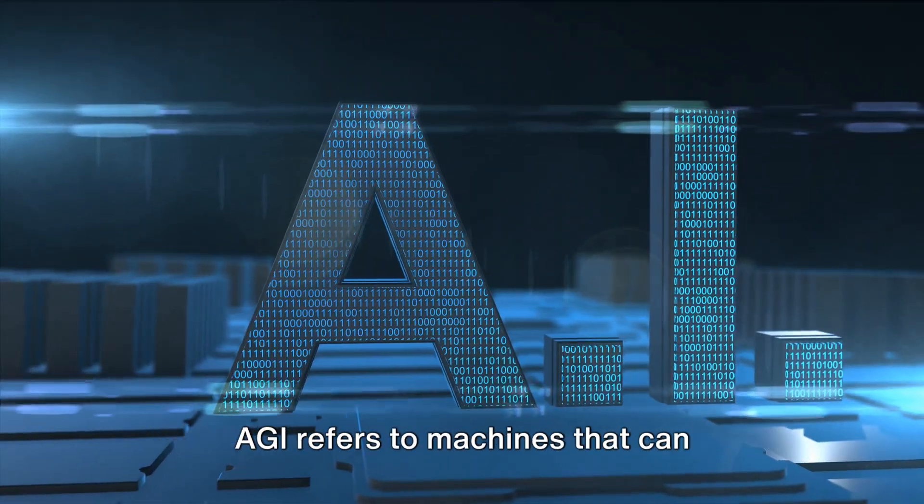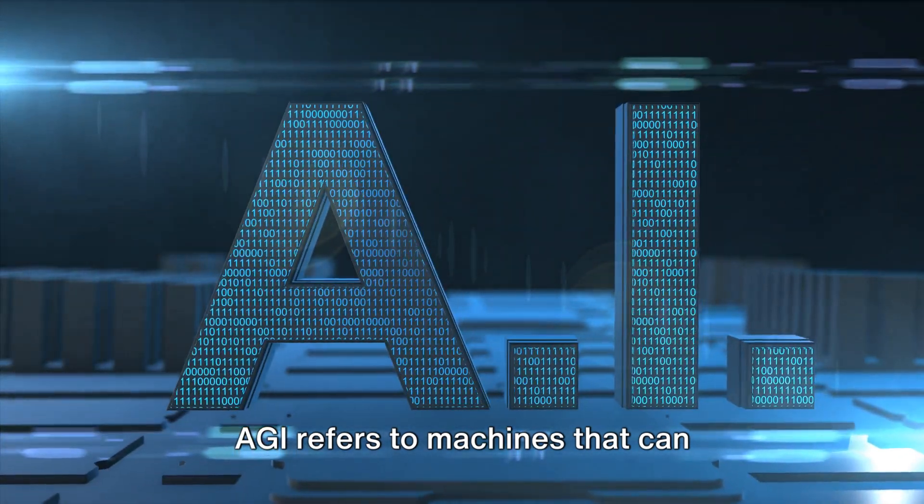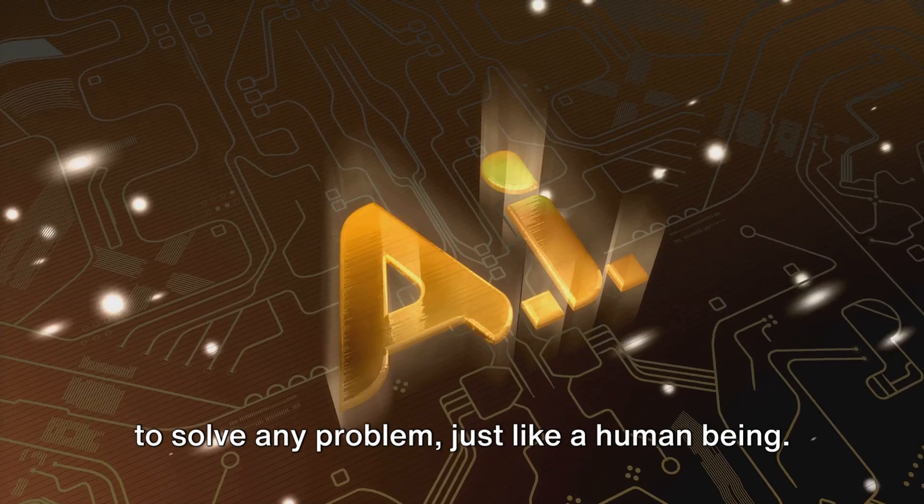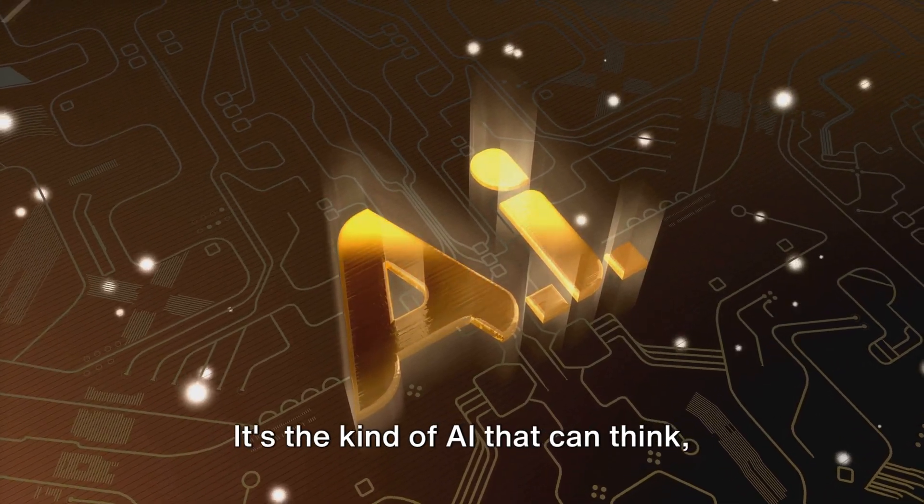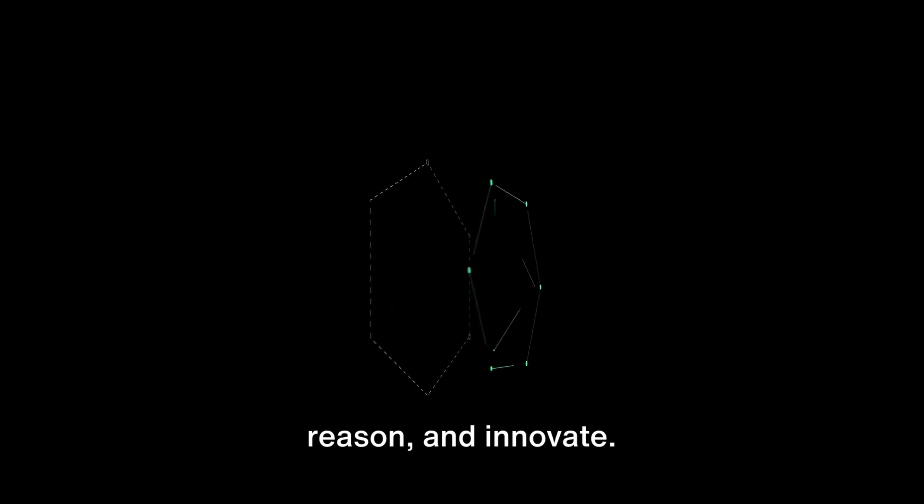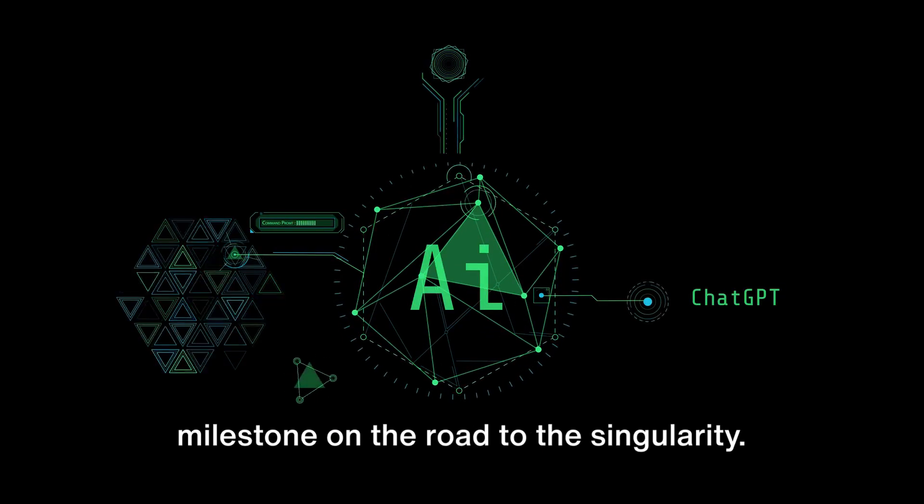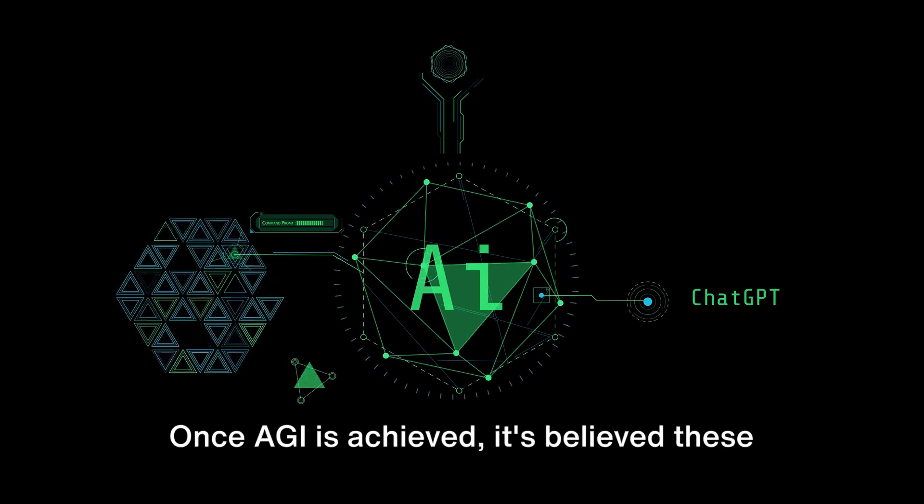But AGI, that's a different beast altogether. AGI refers to machines that can understand, learn and apply intelligence to solve any problem, just like a human being. It's the kind of AI that can think, reason and innovate. The creation of AGI is seen as a critical milestone on the road to the singularity.